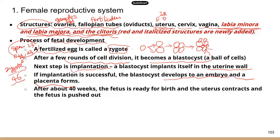After about 40 weeks, the fetus is ready for birth. The uterus contracts and the fetus is pushed out. This is a high-level review of the process of fetal development, so make sure you know the major steps and the order of the different steps.